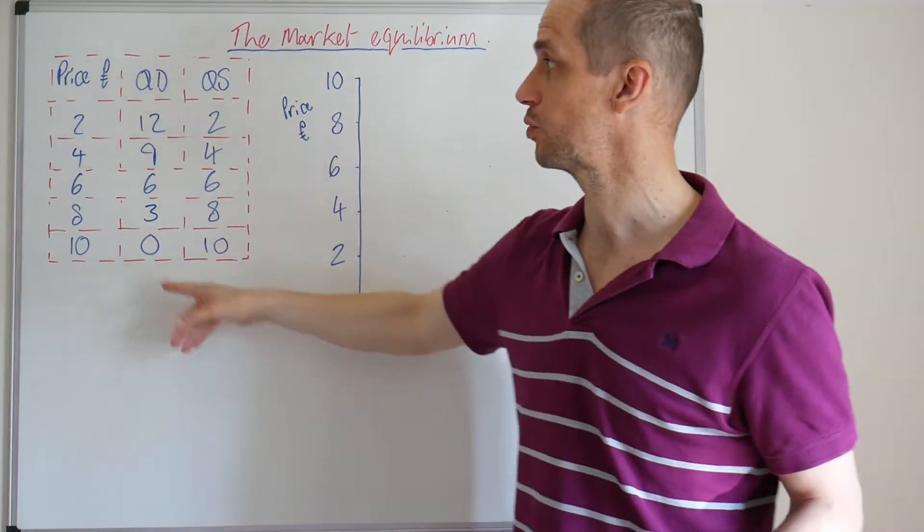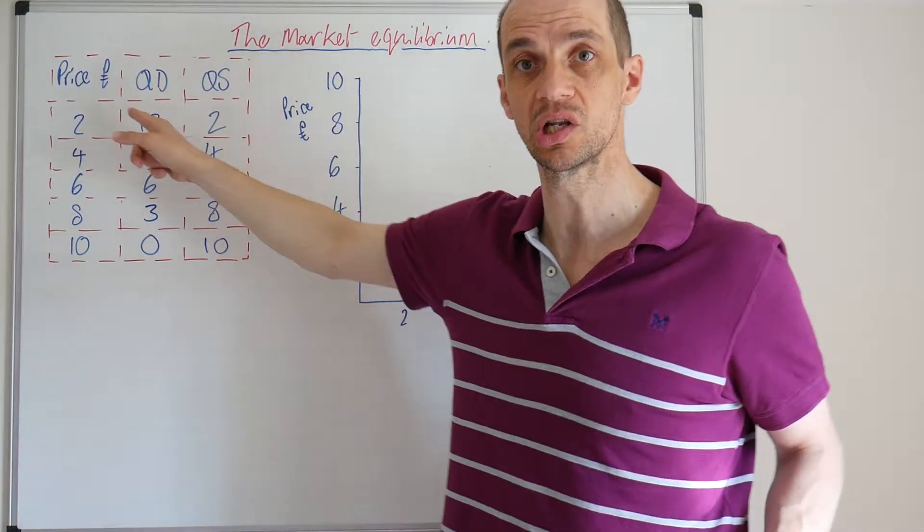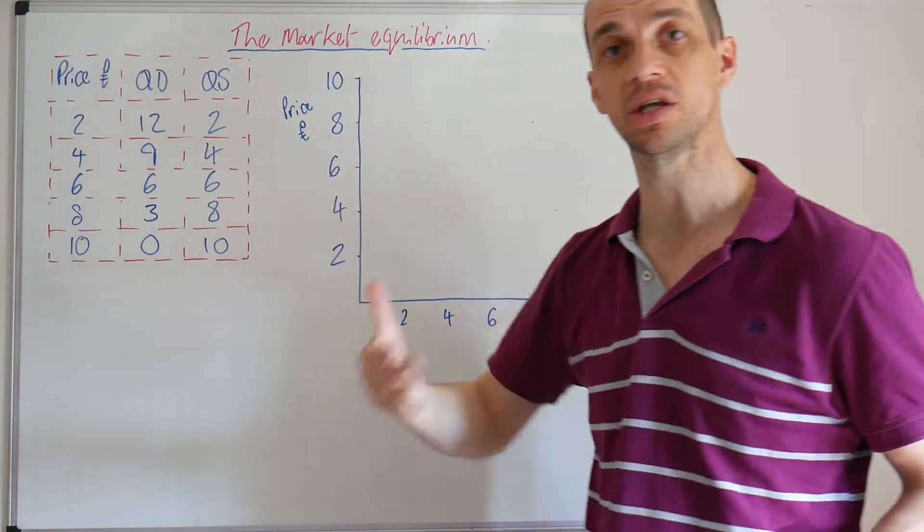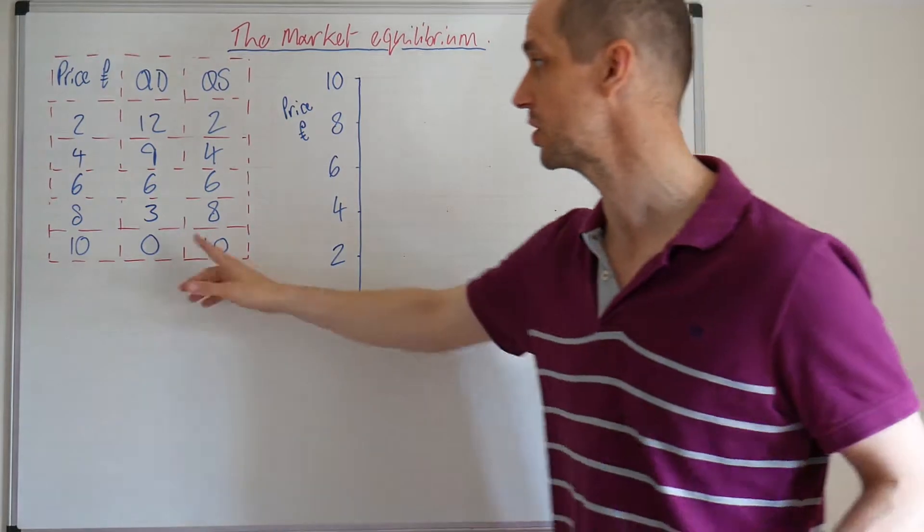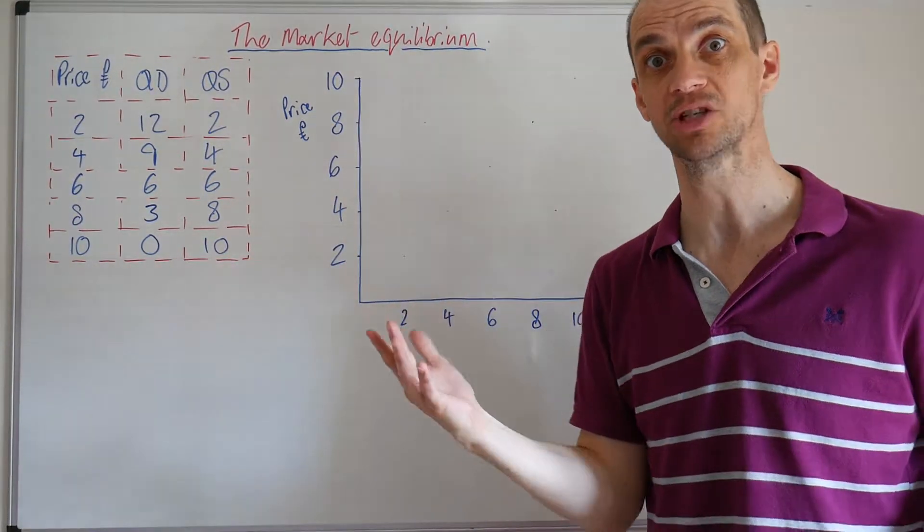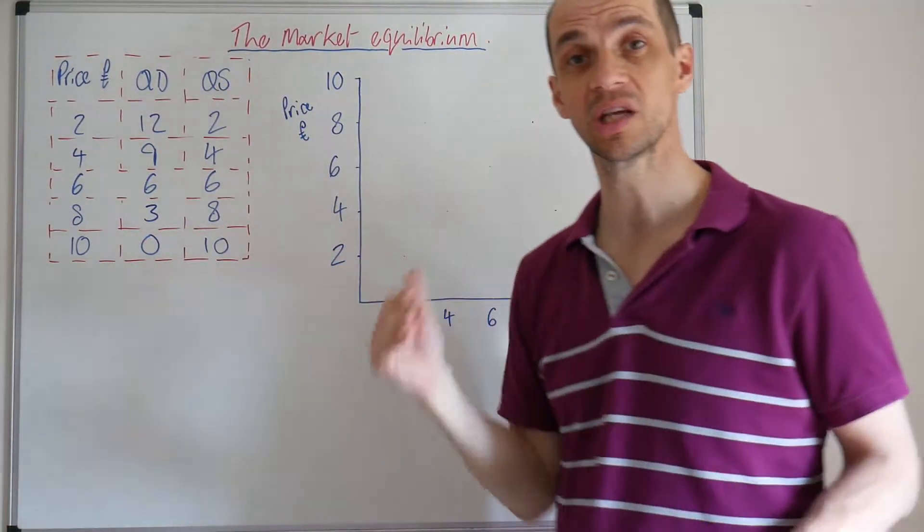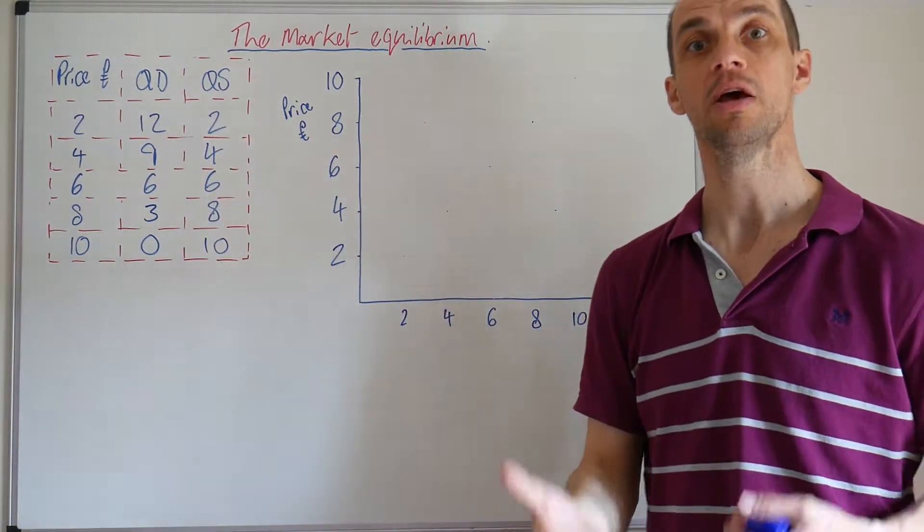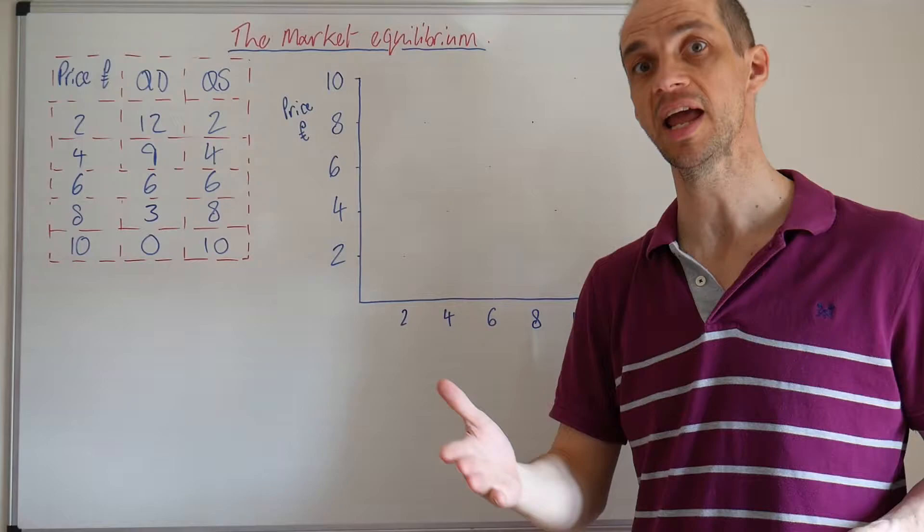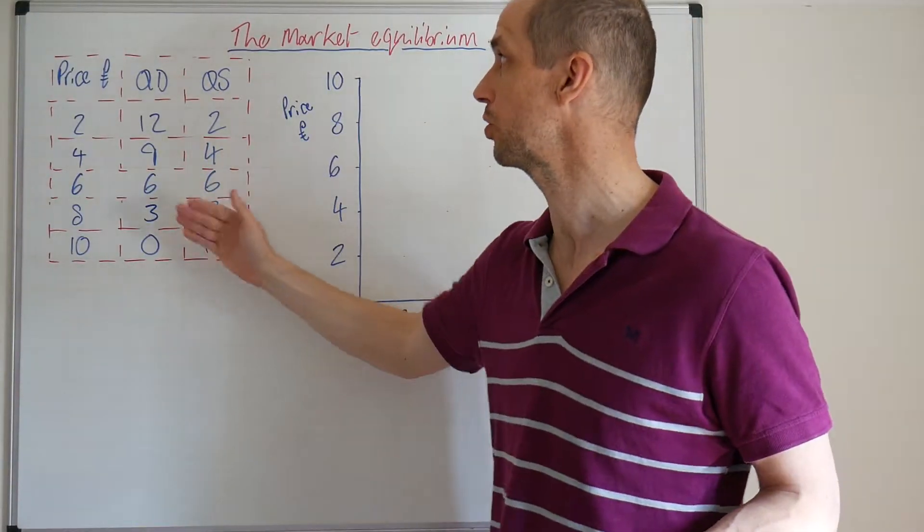We can see that inverse relationship where the price is low at two pounds, high quantity demanded at 12. Where the price is much higher at 10 pounds, zero is actually demanded. So we see that negative relationship between price and quantity demanded, meaning there will be a negative downward slope on the demand curve.